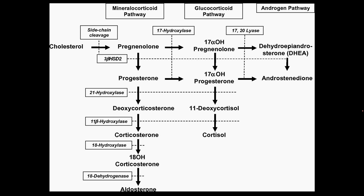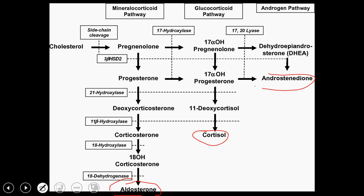So the first thing that I want to talk about is the three hormones that we have here, which are going to be aldosterone, cortisol, and androstenedione/DHEA — so mainly your sex steroid hormones. These are the main hormones that are going to be produced in the adrenal cortex. Really important to know that — remember that these are produced in the cortex.